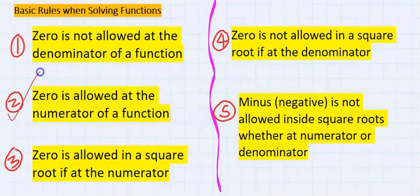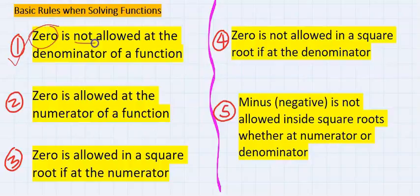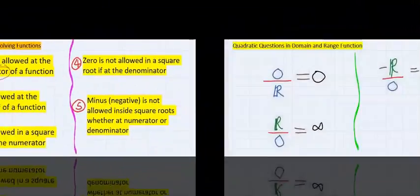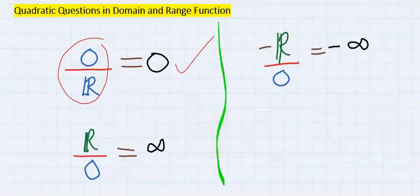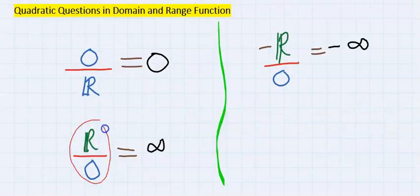In rule two, x can take zero at the numerator. However, in rule one, zero is not allowed at the denominator. Zero at the numerator of any number is not a problem; it will return zero. However, zero at the denominator of any number is a problem; it turns to infinity.